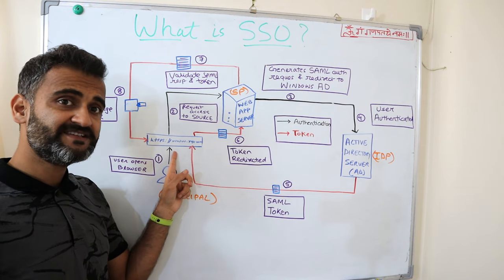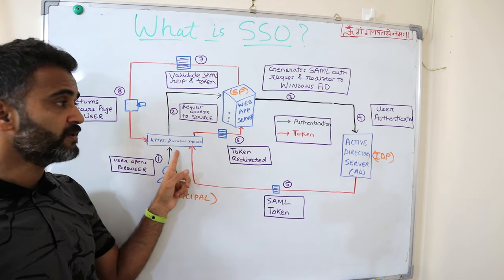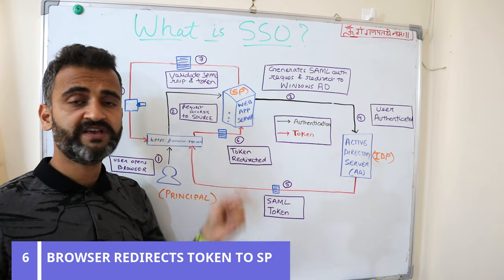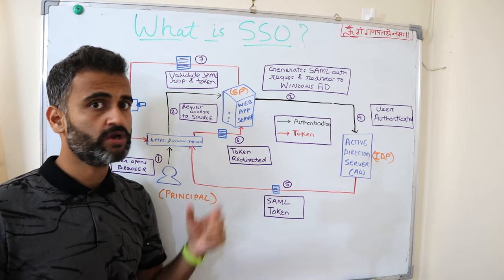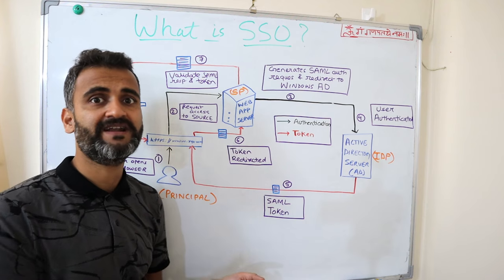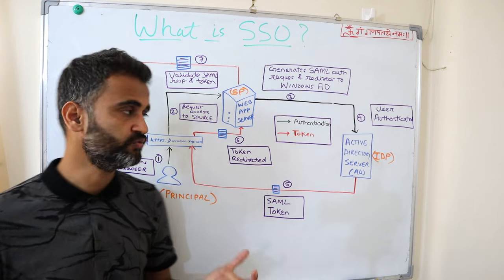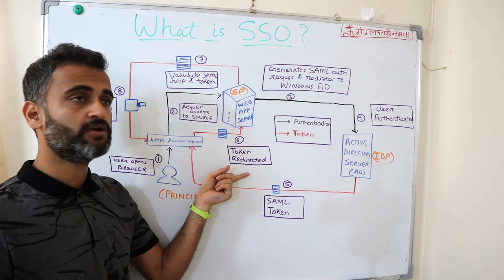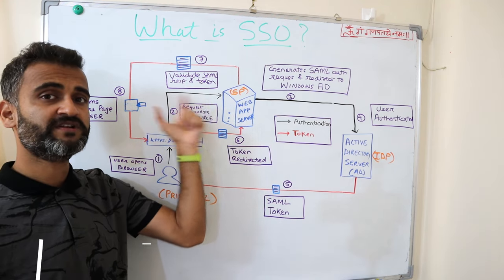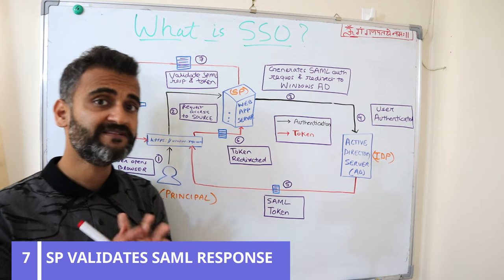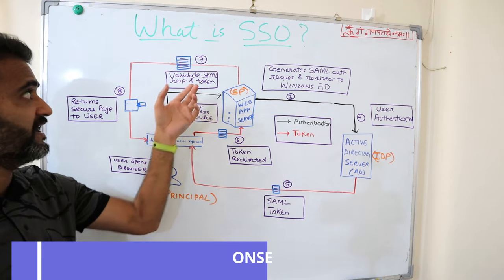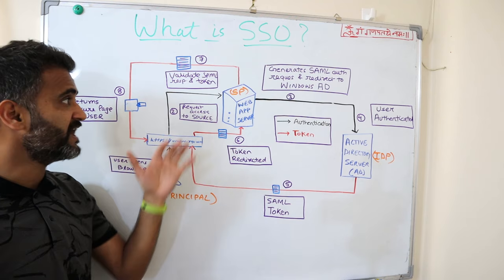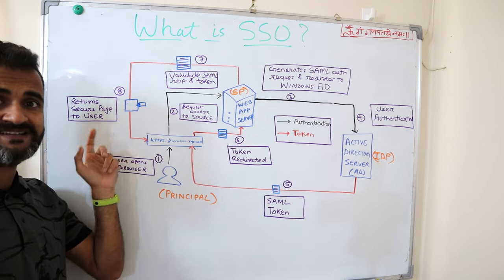Once the response reaches the browser, the browser redirects this token back to the service provider, saying: I got this token — check it, it's my identity card, validate it, I am a genuine user. So this particular web server, once it receives the token, will validate the SAML response. And if it is a valid response and a valid token, it will grant access to that particular secure page at step eight.